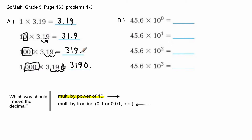Mathematicians would say you don't have to put the decimal point at the end of a whole number, and that's correct. But I'm putting it in anyway — it's not incorrect, and it shows the pattern: the decimal moved one space to the right each time because I was multiplying by one more power of ten each time.